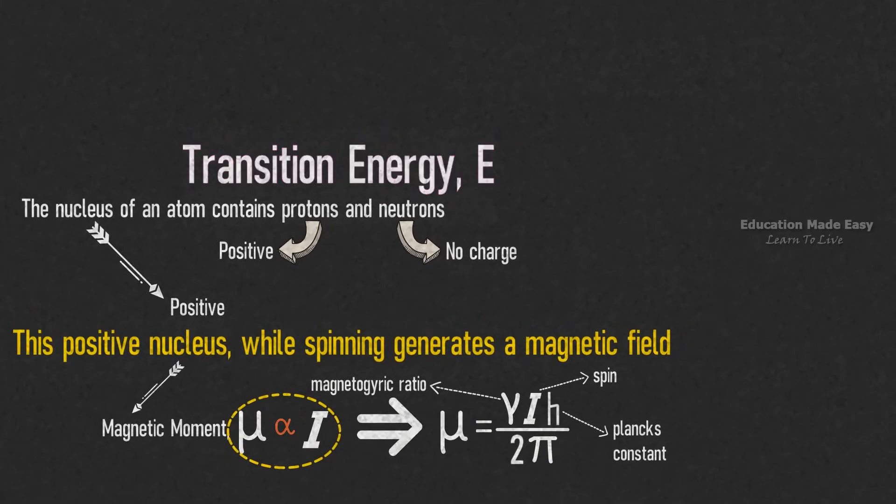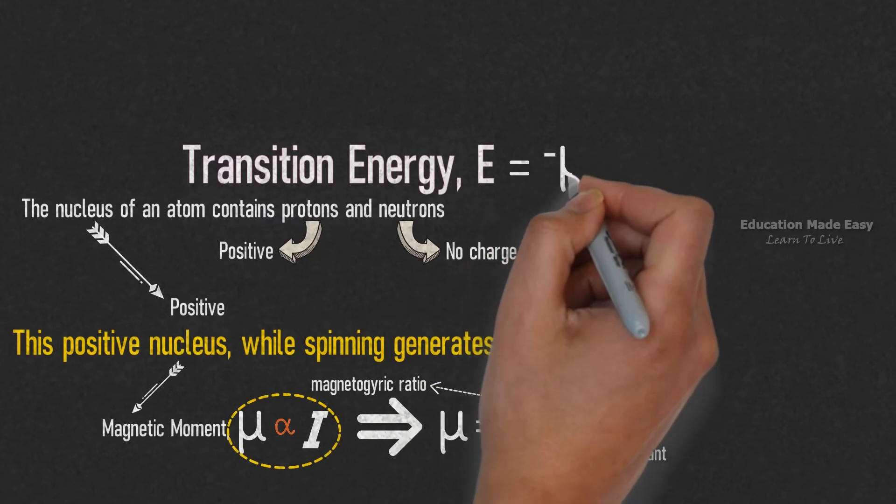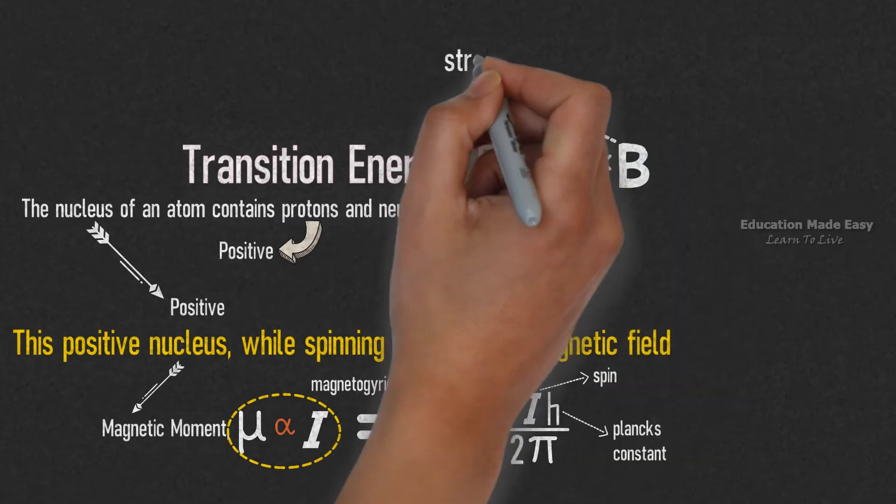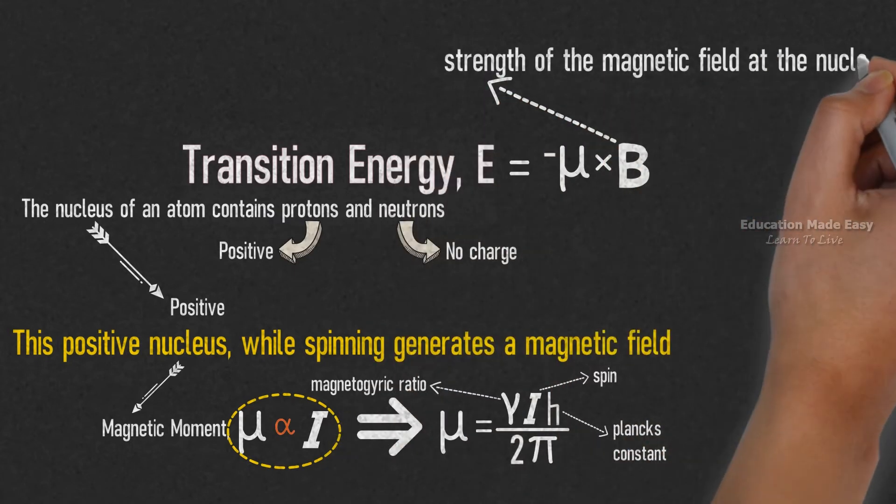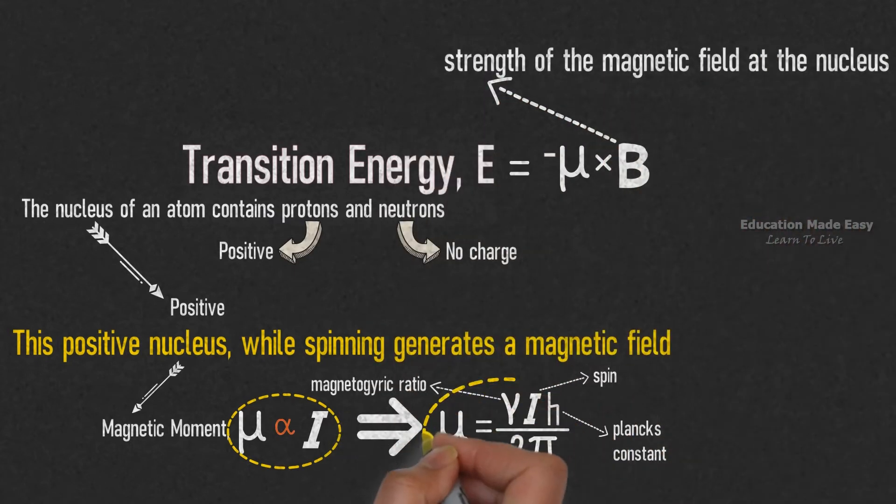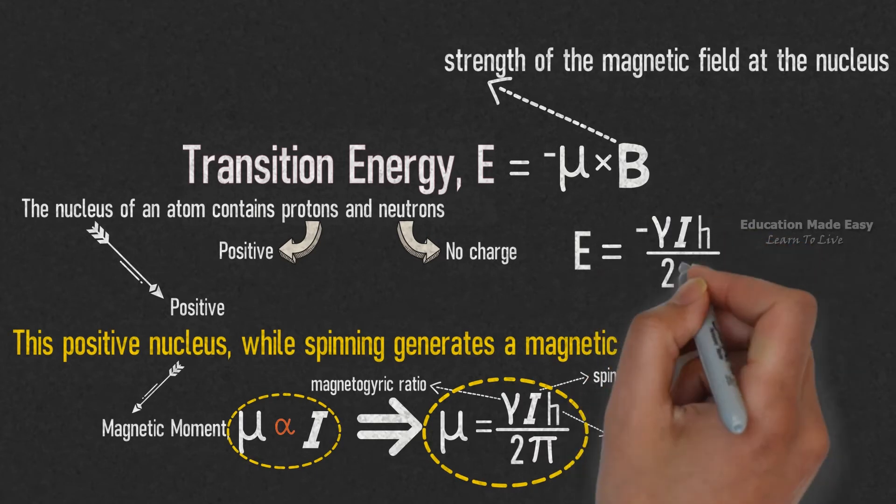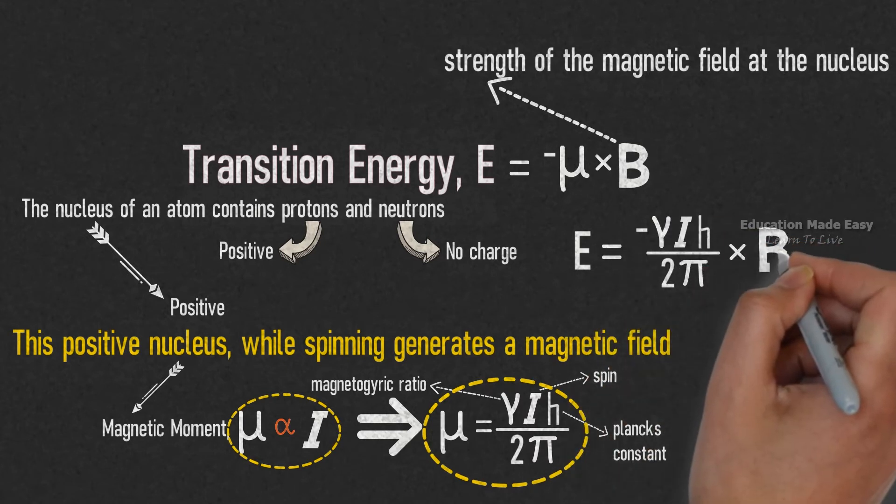E is equal to negative μ times B. B is the strength of the magnetic field at the nucleus. Substituting the formula for μ in the equation, we can write transition energy E is equal to negative γIh divided by 2π into B times ΔI.